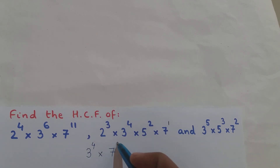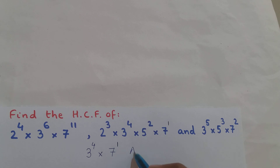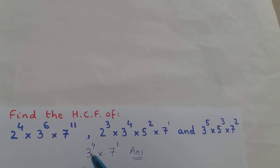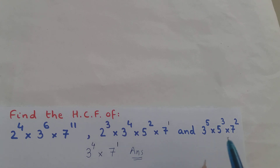1 is smaller than 11 and 2, so the exponent of base 7 is 1. Therefore, the HCF of the three expressions is 3⁴ × 7¹.